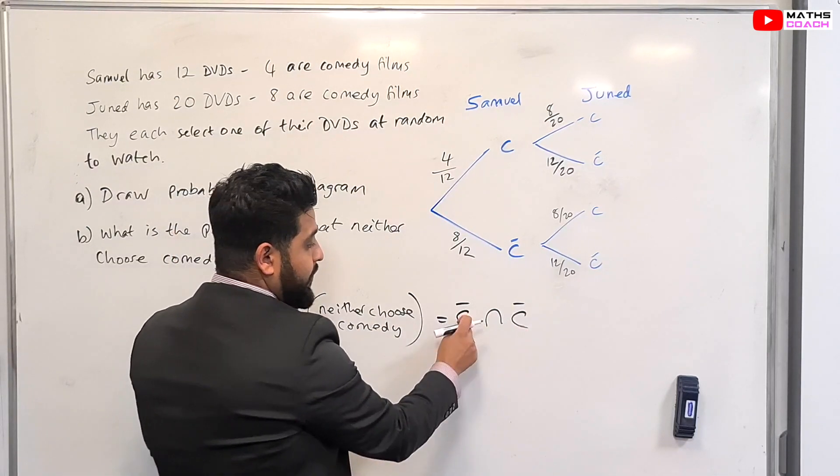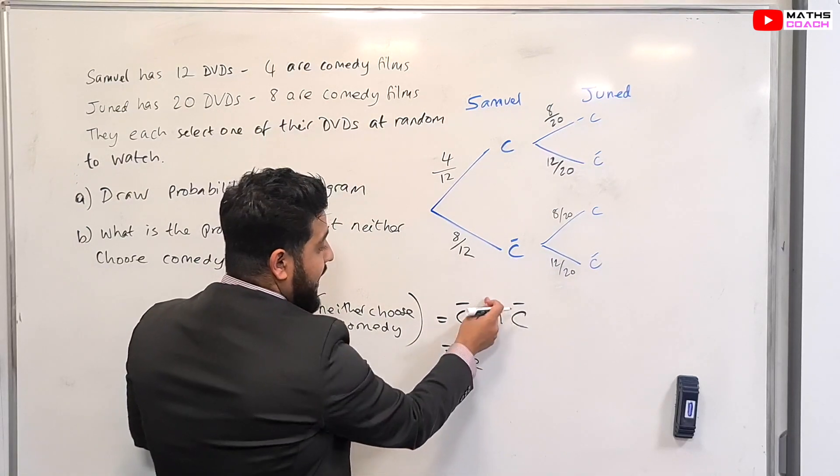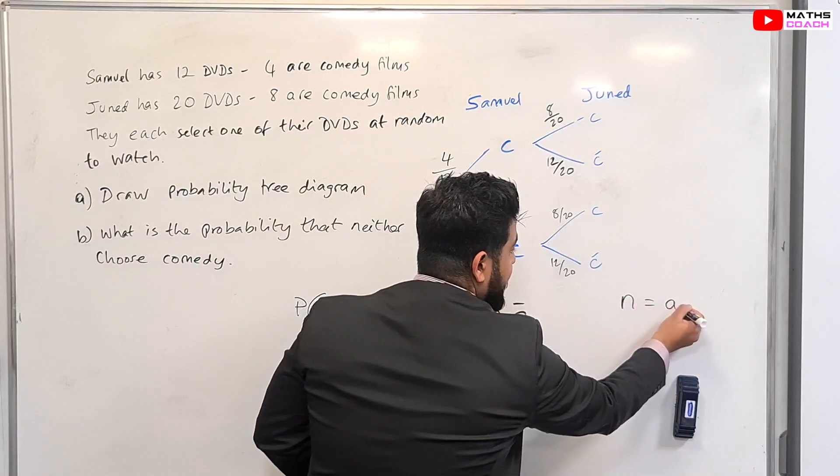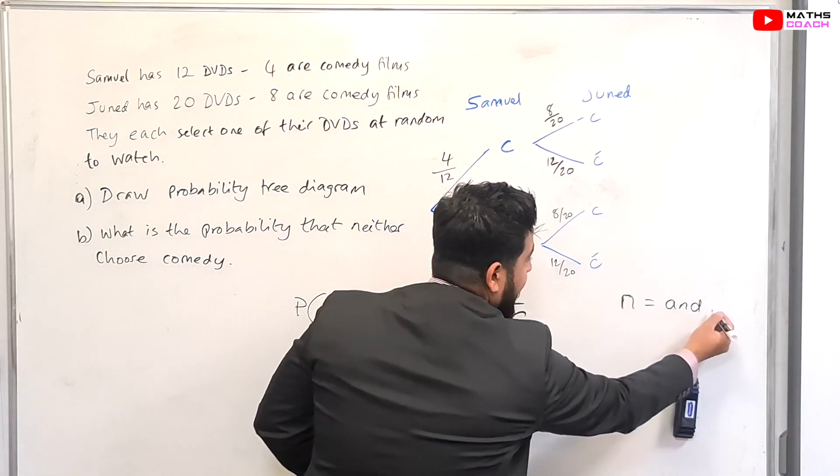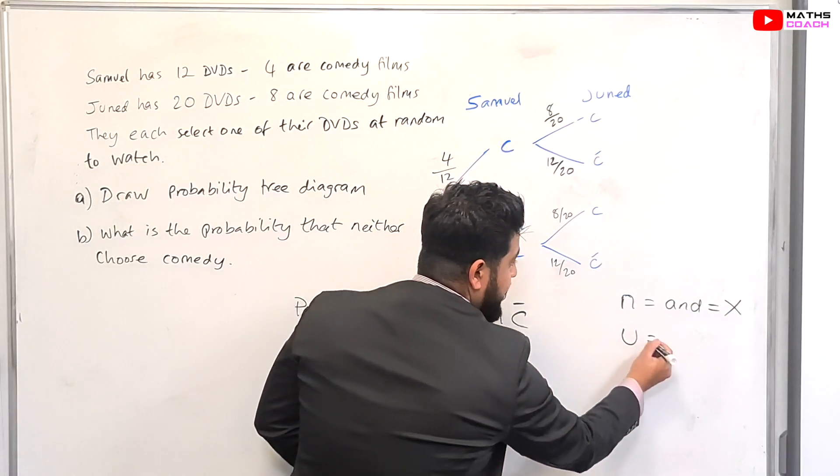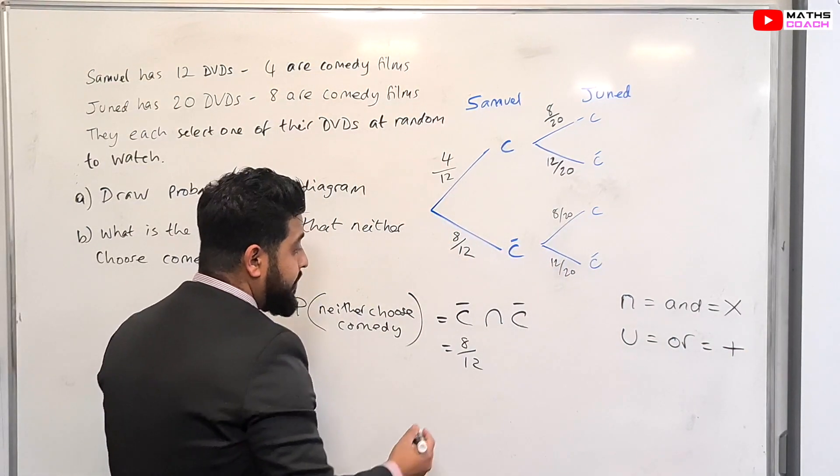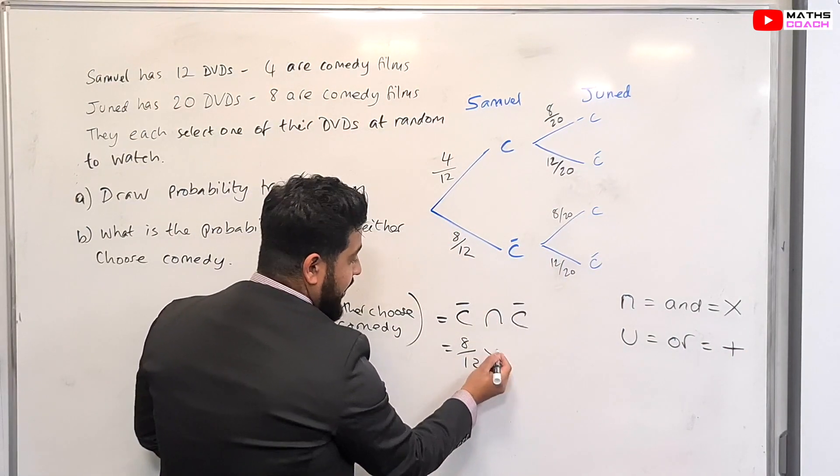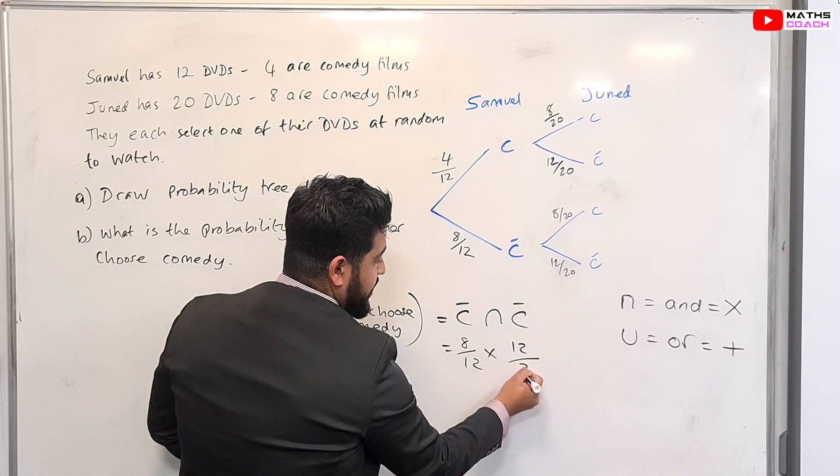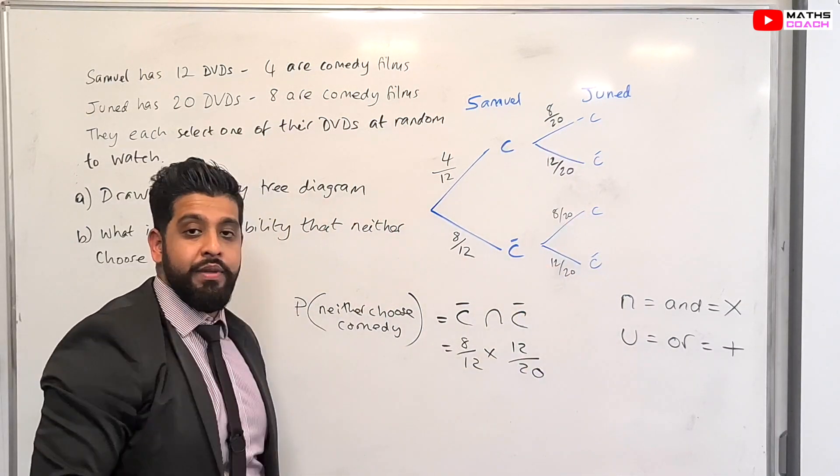So what are the probabilities of not comedy and not comedy? 8 out of 12. And remember what this means? This means and. This means and. It's an intersection, not a union. And 'and' is represented by times. And if you have a union, it means or, and that is represented by plus to add. So this is times. So therefore, 8 over 12 times by 12 over 20, which is the probability of Junaid not having a comedy film that he has chosen.